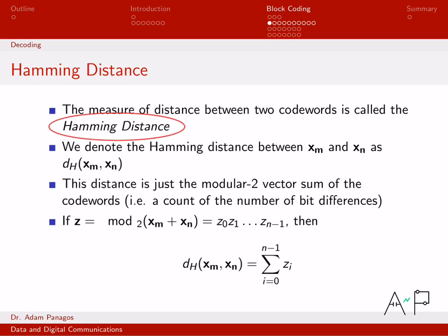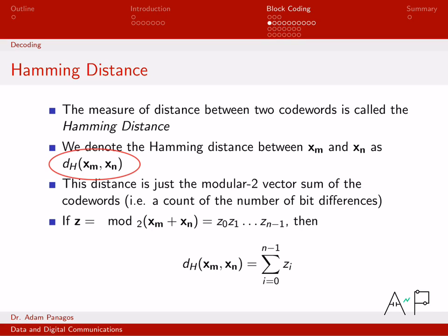We call this the Hamming distance, and we denote it as d sub h — d for distance, the subscript h to denote the Hamming distance. We can compute it between any vectors of the same length. If we're talking about the distance between code words, maybe code word x sub m and the nth code word x sub n, I would refer to the distance between those as this quantity. The Hamming distance takes two inputs: two things you want to compare to figure out how close they are.